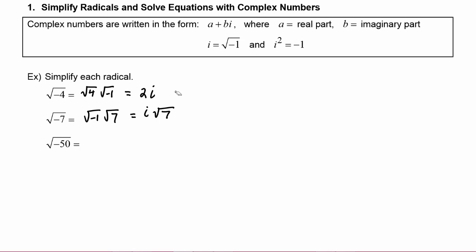It's standard to leave your answers with the irreducible part last. It wouldn't be incorrect if you wrote radical seven times i, but the danger is that students sometimes write it as radical seven i where the i is under the radical, and that can never happen. To be on the safe side, it's best to put the i in front of radical seven.